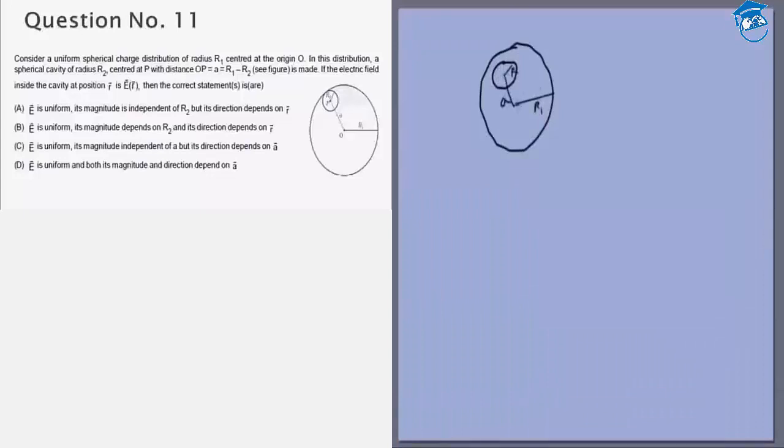We know the standard result: inside a cavity, the electric field is given as ρr/3ε₀. If this were a complete sphere, then at this point the electric field would be ρr/3ε₀. If you are calculating it at any point, let's say here at any random point, let's call this position vector r. So it will be ρr/3ε₀.